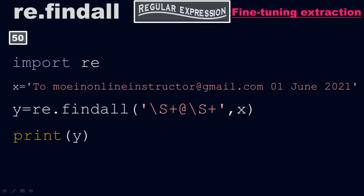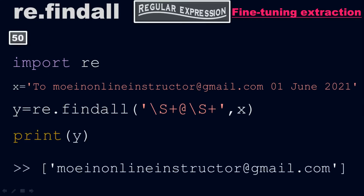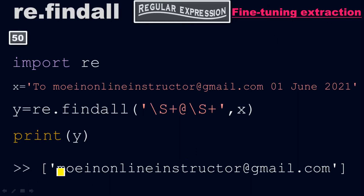When you take the print of y, it will determine this output: moinonlineinstructor@gmail.com. Look at the output — we have extracted a complete email address out of this line, which is x, in a very fine way. Therefore, we call it fine-tuning extraction. This process is called fine-tuning extraction.